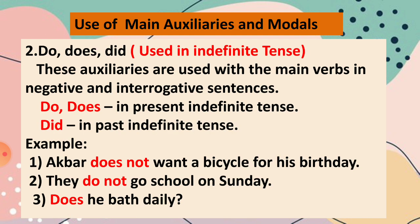The next auxiliaries are do, does, did. These are used in the indefinite tense — in negative and interrogative sentences. Do and does are used in the present indefinite tense; did is used in the past indefinite tense. For example: Akbar does not want a bicycle for his birthday. They do not go to school on Sunday. Does he bathe daily? So does not, do not, and does are used to help the main verb, as you can see here.